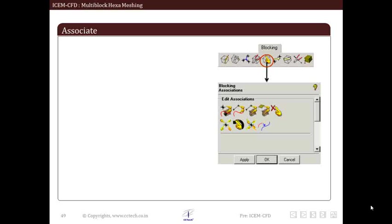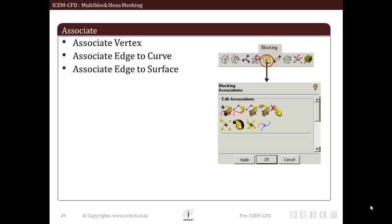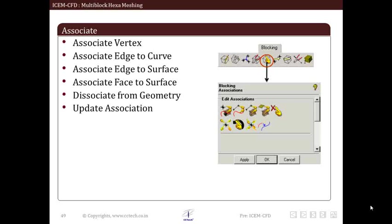Our next logical step in learning blocking operation is to explore how blocking associations are done. We can do this by various ways: first associate vertex, associate edge to curve, associate edge to surface, associate face to surface, dissociate from geometry, update association, reset association, project vertices, and group curves. We will see these in detail in the coming slides.